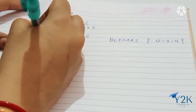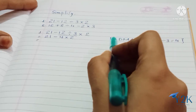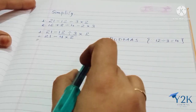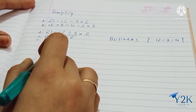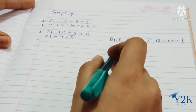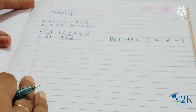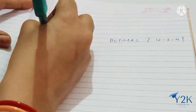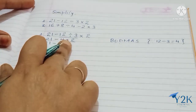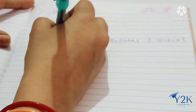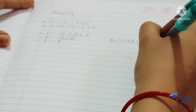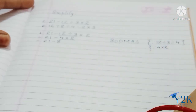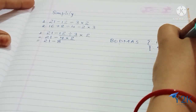The next step — follow this BODMAS rule till the end. We have done division now. In the expression we got, we don't have a division sign anymore, nor are there brackets. So what comes next? Next is M, that is multiplication. We are going to solve the multiplication: 4 multiplied by 2 gives the answer as 8.